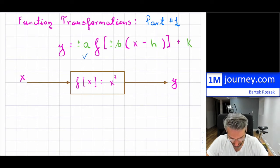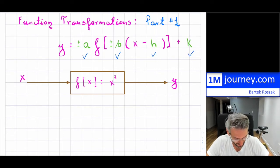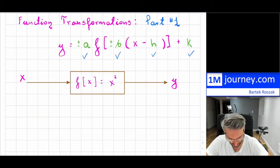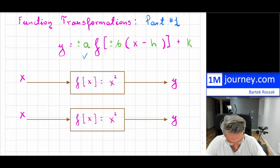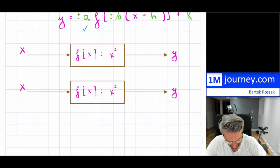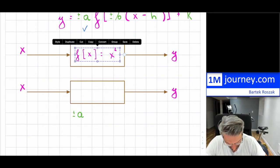What would happen if our input was also being scaled — let's say I put a 'b' in here. These constants don't really have a meaning; some teachers might use different constants. What would happen if we added or subtracted 'h' — which could be positive or negative — and then what would happen if we had a 'k' and we started shifting around our function? So we'll break this down one by one, starting with 'a'.